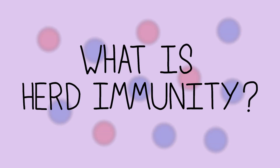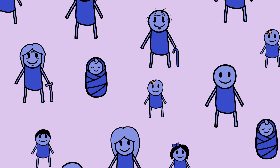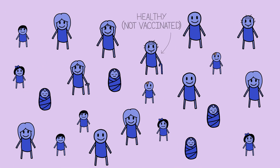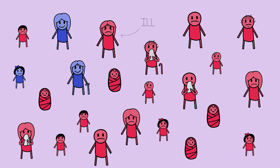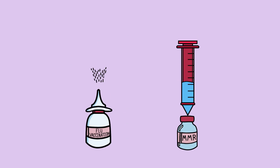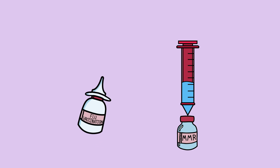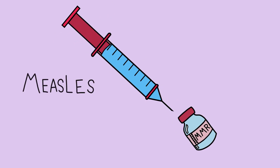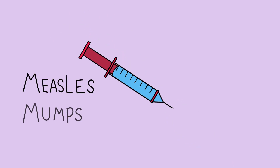What is herd immunity? Picture a community or herd of healthy people. An infectious disease would pass easily through the community from person to person. Vaccines train our immune system to protect us from diseases it hasn't come into contact with before. For example, the MMR vaccine provides immunity against measles, mumps and rubella.